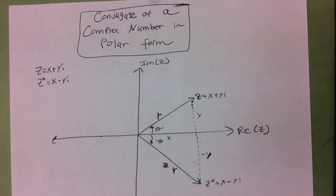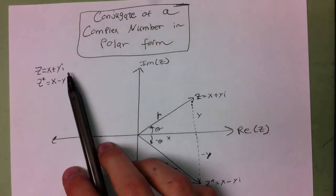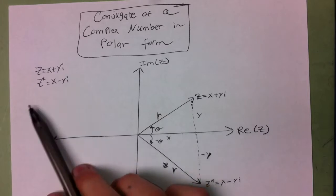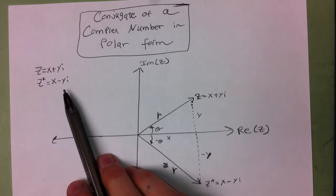We learned that in rectangular form, if you have z equals x plus yi, then that number has a conjugate, z-conjugate, which is x minus yi.